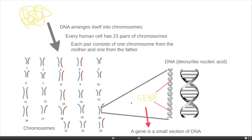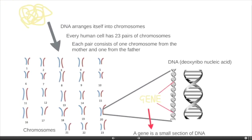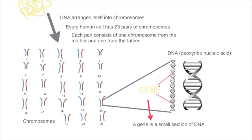This completes the puzzle then — a small section of DNA is called a gene, and a gene will code for a particular characteristic. For example, this could be the gene for blue eyes, or it could be the gene for tongue rolling. So a particular small section of DNA is called a gene and that will then go on to code for a particular characteristic.